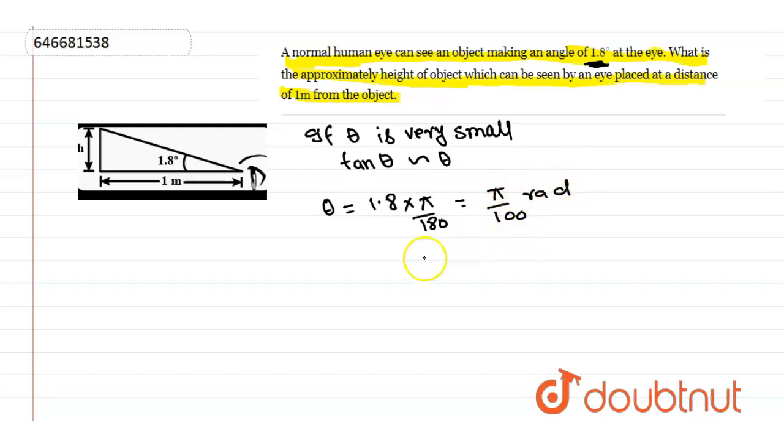Now in this triangle, we can write tan theta. As we all know that tan theta is equal to perpendicular by base. So what is perpendicular here? It is height. And what is base here? It is 1 meter. So we can write...